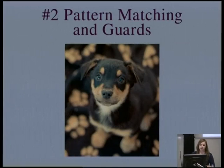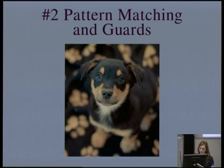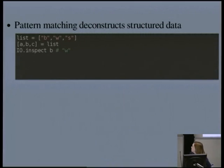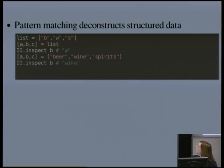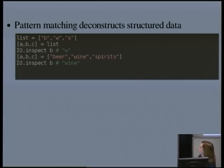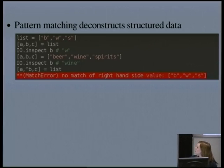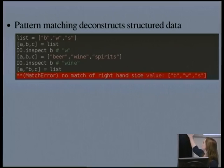The next area I want to look at is pattern matching and guards. This is used where, in a lot of imperative languages, you would have different control flow statements — there's an alternative to that. Pattern matching deconstructs structured data. The equals here is really a match operator. So here we're saying list, match that to B, W, S. But if we now say match it to the list of variables A, B, and C, it's now going to set each of those to the components of that list — so if we inspect B now it's going to be W. Because Elixir doesn't have single assignment, you can do this again with the same variable names. If you don't want this behaviour and want the variables when matching to retain their current value, you can add a caret before the variable name. Now it's trying to match some variable A, wine, some variable C against the list B, W, S — and that's not a match, so we get an error.